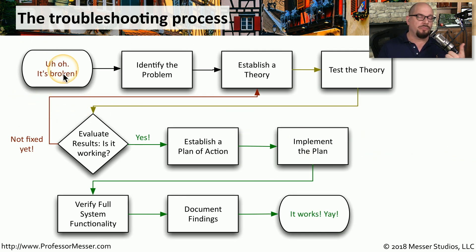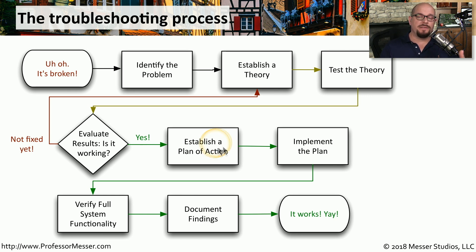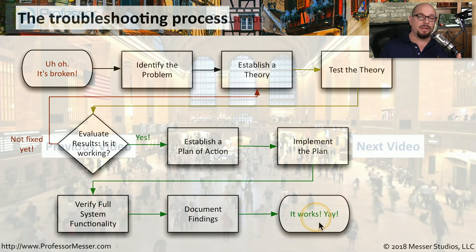Let's step through the troubleshooting process one last time. When you run into a problem, first gather as much information as possible to identify what the problem is — error messages, user information, or log files. Then establish a theory of what you think the problem might be, and perform tests to see if your theory resolves it. If not, go to the next theory on your list until you find one that works. Once you have a fix, document the process, get a time and date from the change control team, implement the plan in production, and verify the system is working. Finally, document everything you learned so that if the problem occurs again, you have a knowledge base to solve it quickly.